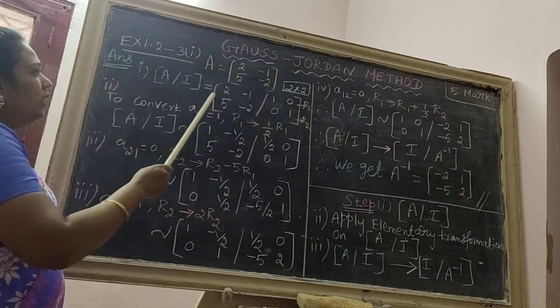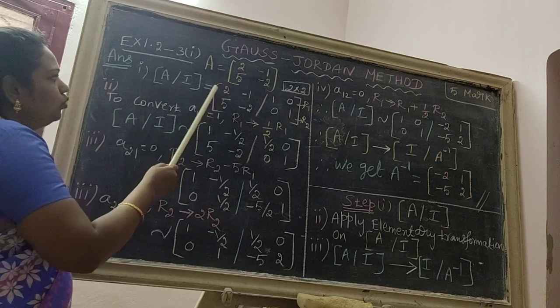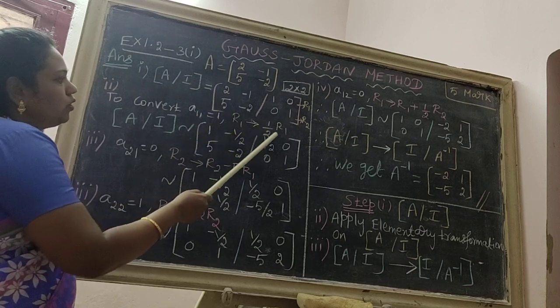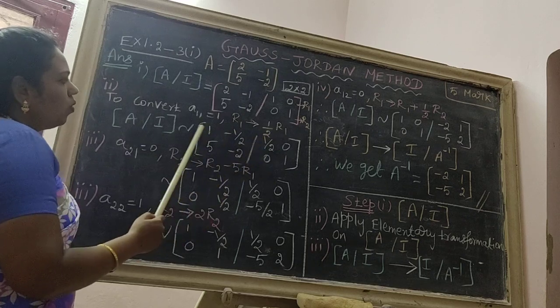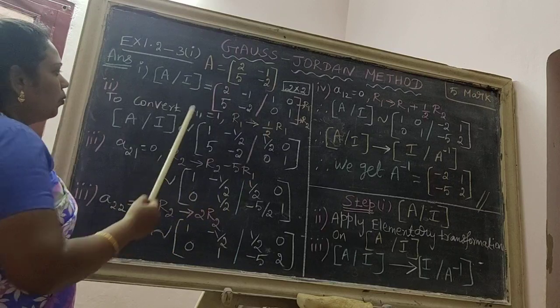Next step, to convert A11 equal to 1. Here the value is 2. Therefore we convert R1 implies 1 by 2 R1. Then we get the answer 1 minus 1 by 2, 1 by 2, 0. Next step, put delta.